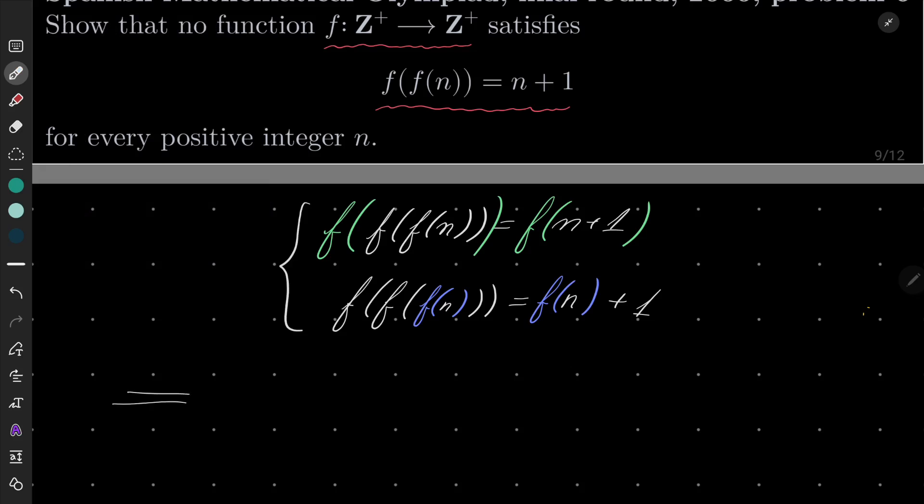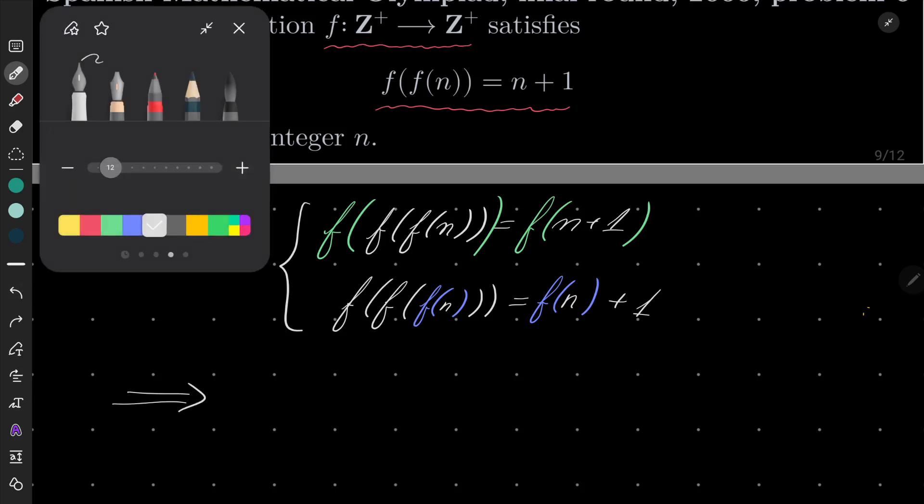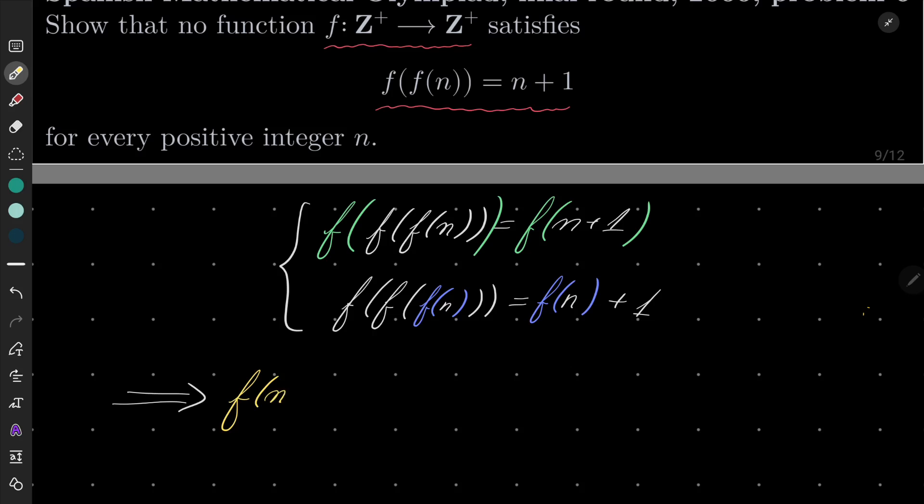So that implies that f(n+1) equals f(n) plus 1 for every positive integer n.